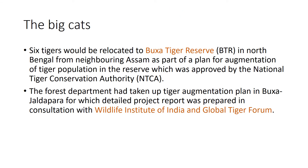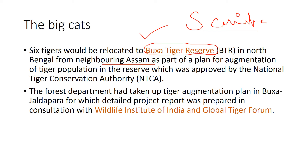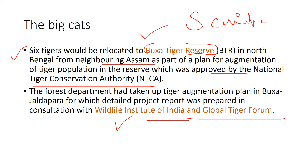There was already a question regarding relocation of tiger reserves - it was on Sariska. Sariska was the first tiger park to relocate tigers. Following Sariska's footsteps, in the Buxa Tiger Reserve, tigers were relocated from neighboring Assam. This was approved by the National Tiger Conservation Authority (NTCA). The forest department undertook a tiger augmentation plan for Buxa and Jaldapara, for which a detailed project report was prepared in consultation with the Wildlife Institute of India and the Global Tiger Forum. Key point: tigers were taken from Assam to Buxa in West Bengal - don't confuse the direction.